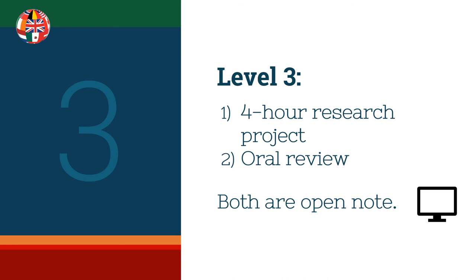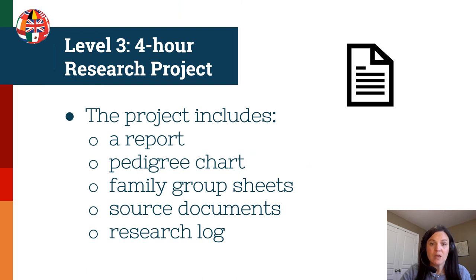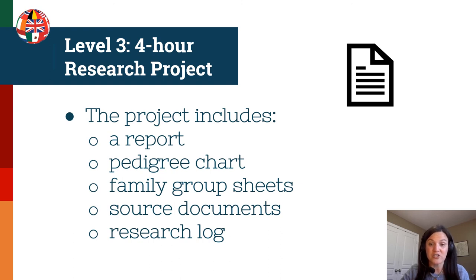Level three is a proctored four-hour research project. Four hours isn't very long, so we don't expect a huge document — we want to see that you know how to do research and construct a project for a client. Within those four hours, produce a brief report, a pedigree chart showing generations you're linking, a family group sheet identifying everyone included, source documents with proper citations even under time pressure, and a research log showing how you approached this challenging short project.